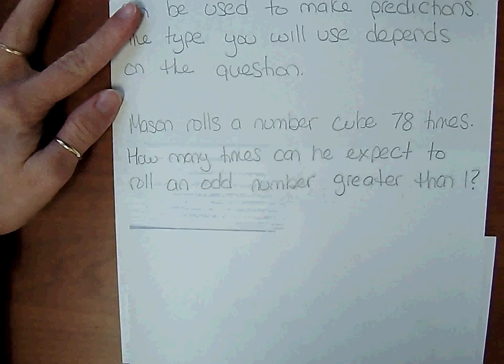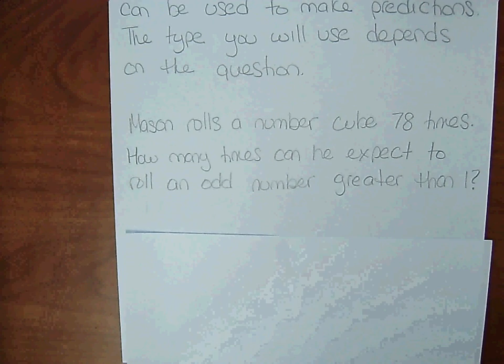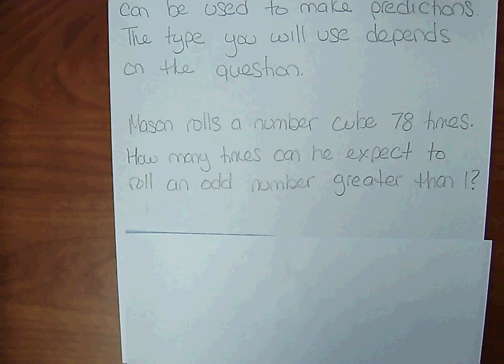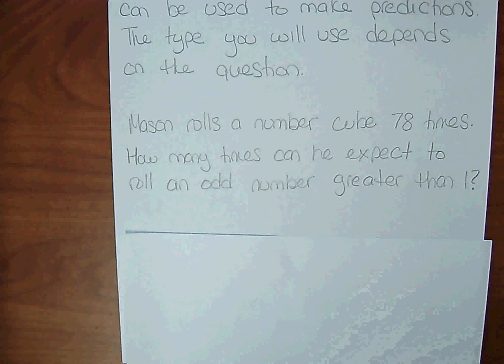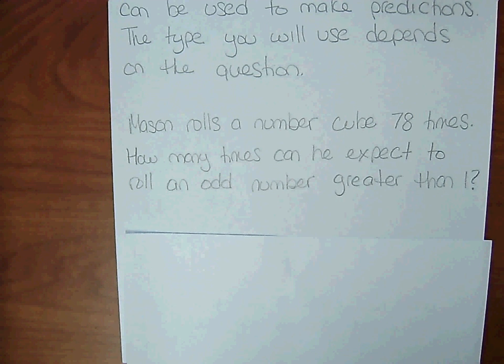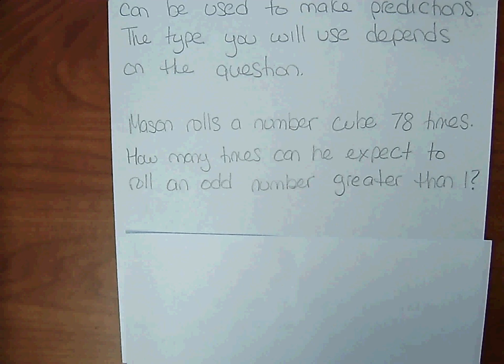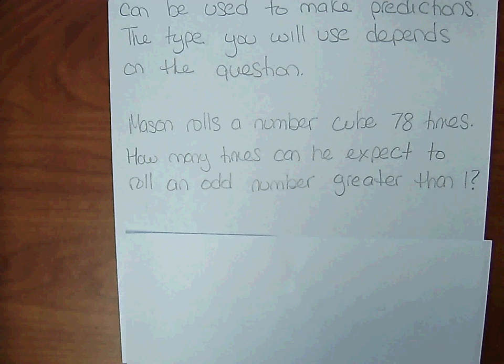Mason rolls a number cube 78 times. How many times can he expect to roll an odd number greater than 1? Here, no experiment has been conducted, so Mason's going to have to use theoretical probability to come up with his prediction.